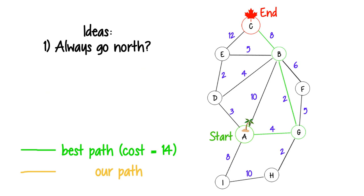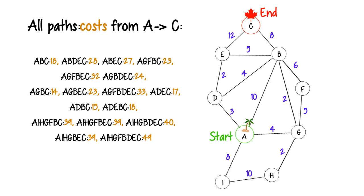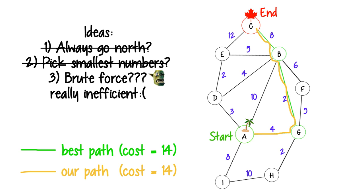Okay, so what can we do? Always go north? Doesn't work. Keep picking smallest numbers? Doesn't work. So what if we just find every possible path between A and C and take the shortest one? This literally can't fail, but it is insanely inefficient. But this is actually not a bad start. Whenever we have a slow solution that works, we should always ask ourselves, can we make it faster?